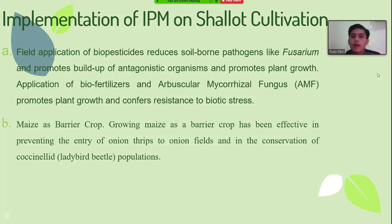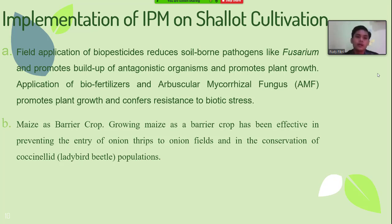The implementation of IPM on shallot cultivation includes soil amendments with bioproducts. Field application of biopesticides reduces soil-borne pathogens like Fusarium and promotes the build-up of antagonistic organisms and plant growth. The application of biofertilizers and arbuscular mycorrhizal fungi, or AMF, promotes plant growth and confers resistance to biotic stress. AMF has been shown to increase resistance to root-infecting pathogenic fungi like Fusarium species and root-infecting nematodes.